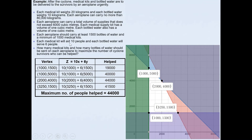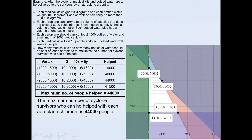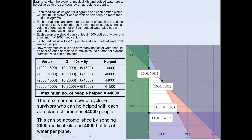From the first part of the problem, we found that the maximum number of people that can be helped was 44,000 people. This was achieved by sending 2,000 medical kits and 4,000 bottles of water per airplane. This was our feasible region.